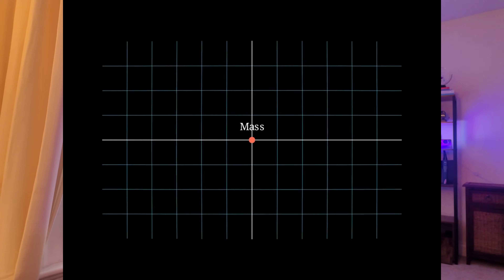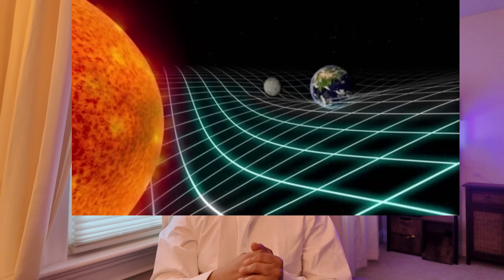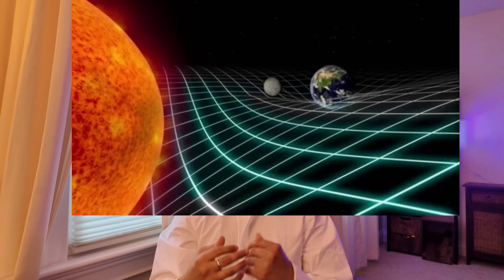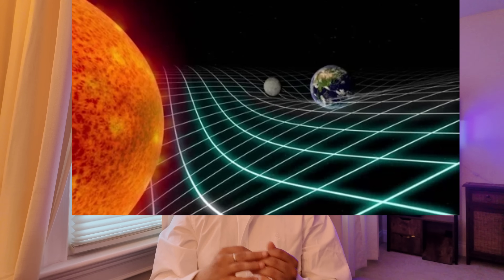Let's build some intuition. Think of spacetime like a stretchy rubber sheet. When you place a mass like a planet or a star on it, the sheet bends. Other objects rolling by don't feel a force pulling them in — they're just following straight paths on curved surfaces. That's gravity in Einstein's world: not a force pulling on things, but geometry curving around mass.